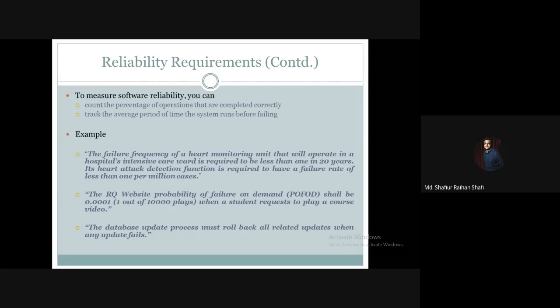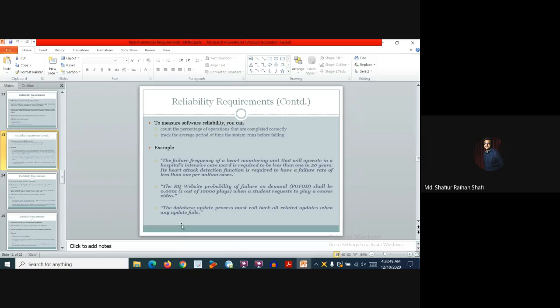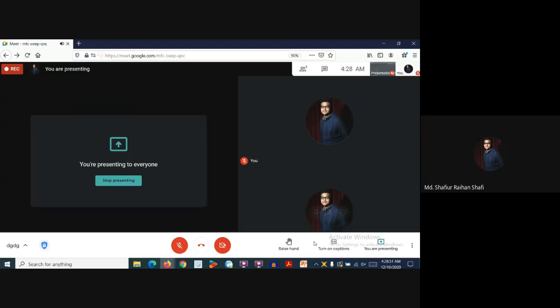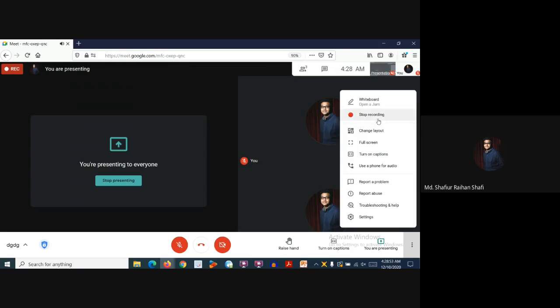Whenever there is a failure, it will roll back the database. What is the acceptable failure rate, what attempt and failure is acceptable - this type of requirement is reliability requirements. I hope you have understood all the things that I have discussed about reliability requirements. If you have any sort of query, kindly provide them in the comment section of this video. Thank you.